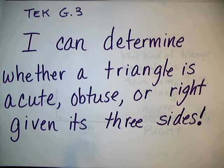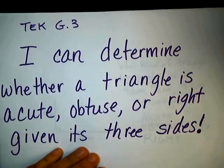All right, now we're going to take a look at Teak G.3, which is determining whether a triangle is acute, obtuse, or right, given the three sides. So before, you could take a look at the angles, but what if we just give you three measurements and ask you what kind of triangle it is?